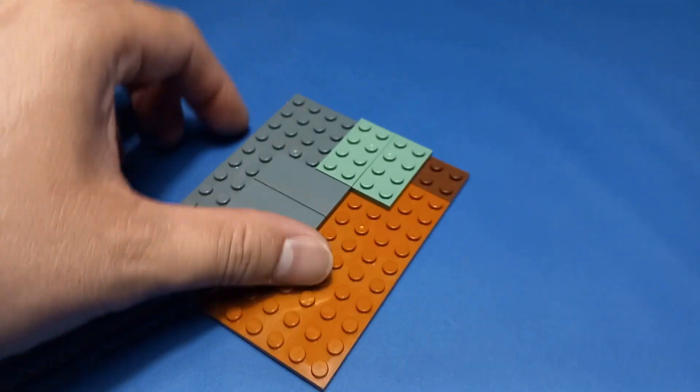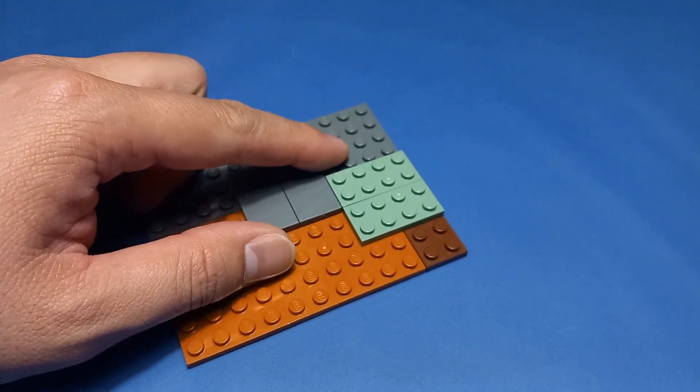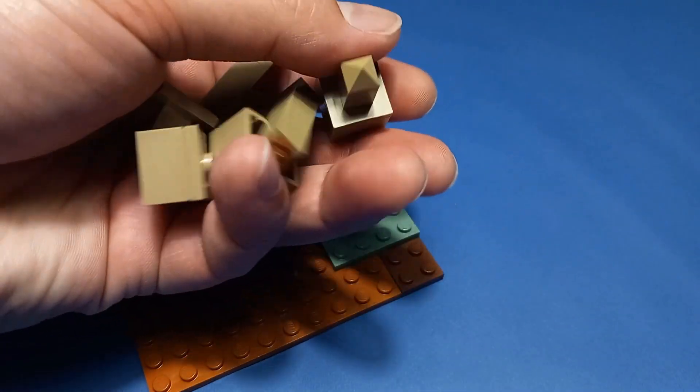Now that the base is done, it's time to build the cave wall. In this right corner, I want to add the dripstone section.